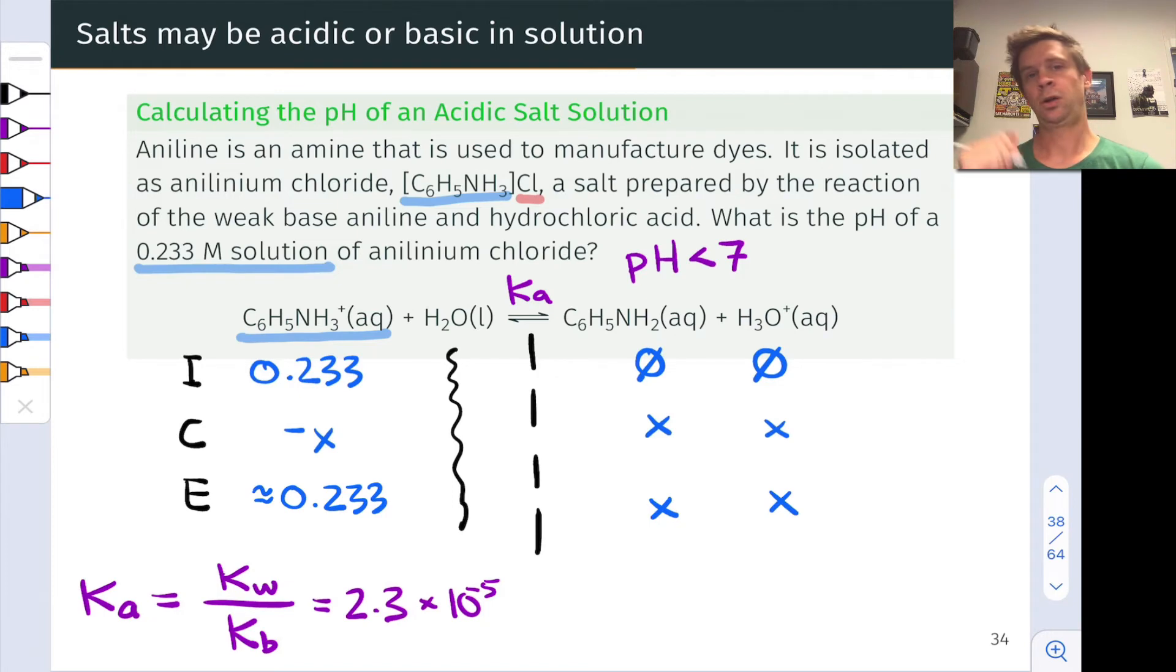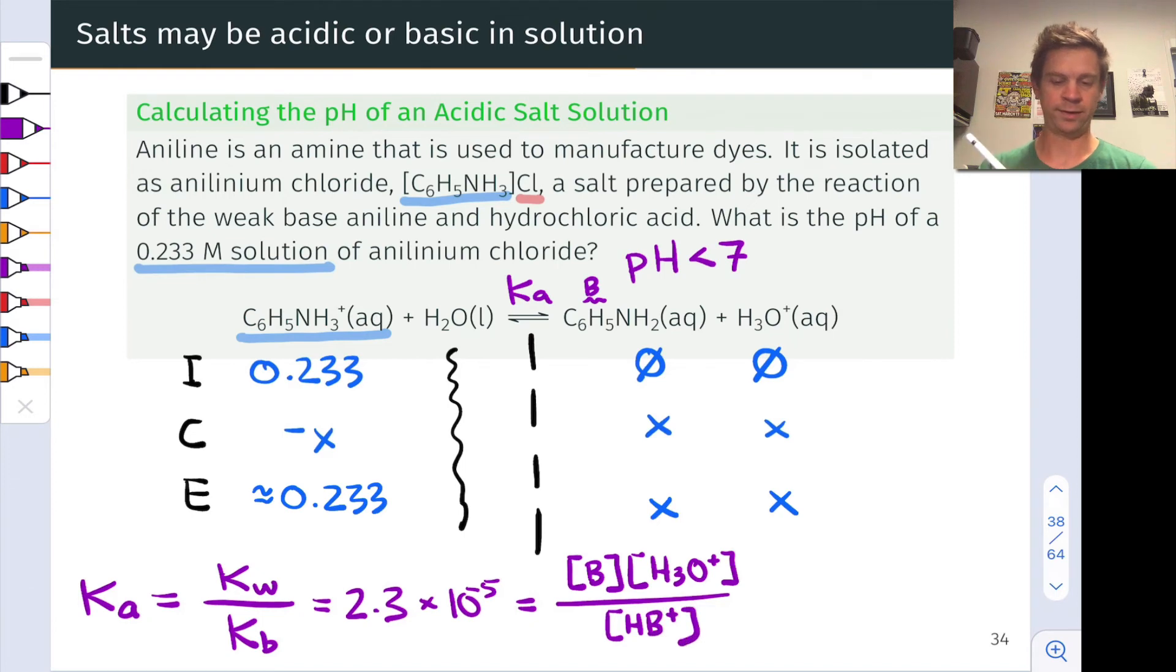And now we can return to our Ka here at the bottom. And recall that this is equal to the equilibrium expression or reaction quotient at equilibrium for this reaction. And that's going to be the conjugate base. And I'm just going to abbreviate that as B here. And just to show that up above, do a little B above that guy. This is just the concentration of B times the concentration of hydronium ion at equilibrium, divided by the concentration of the acid HB+, where we're thinking of the reactant acid over here as HB+.